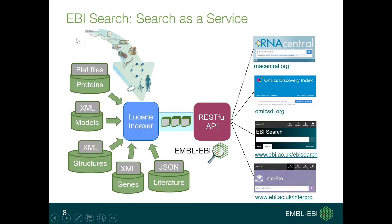In a picture, we can see what EBI Search does. There is a constant flow of data coming into the system, ranging from proteins, models, biostructures, genes, literature, and diseases, which come in different formats — flat files, XML, or JSON streams. They are regularly indexed and the system is based on Apache Lucene technology. The indexes and data are made available through the RESTful API to different portals and communities of users.